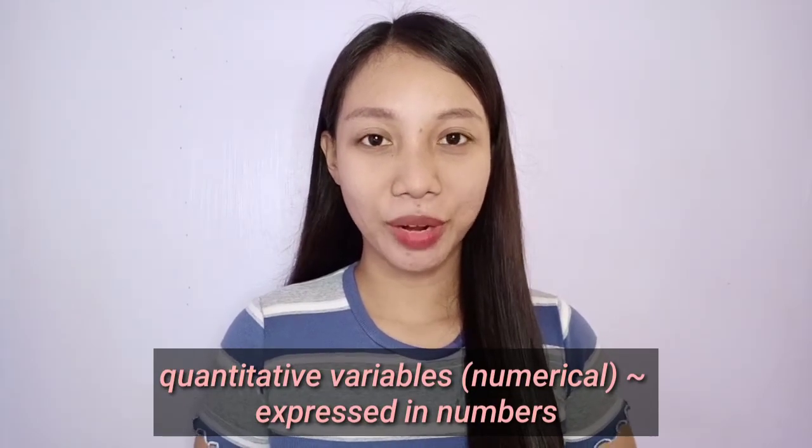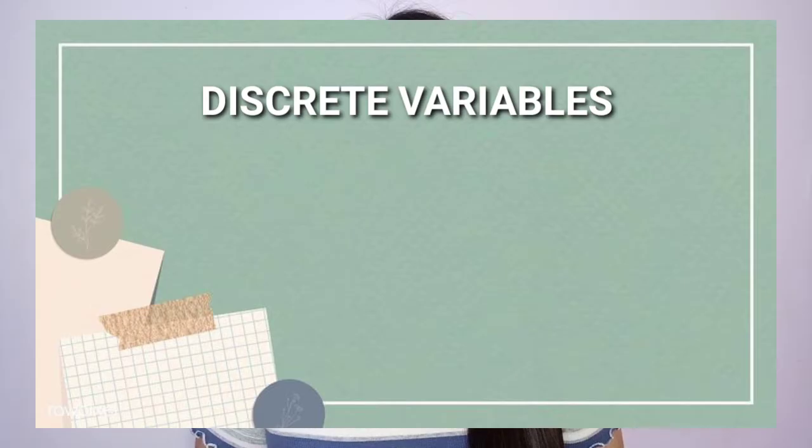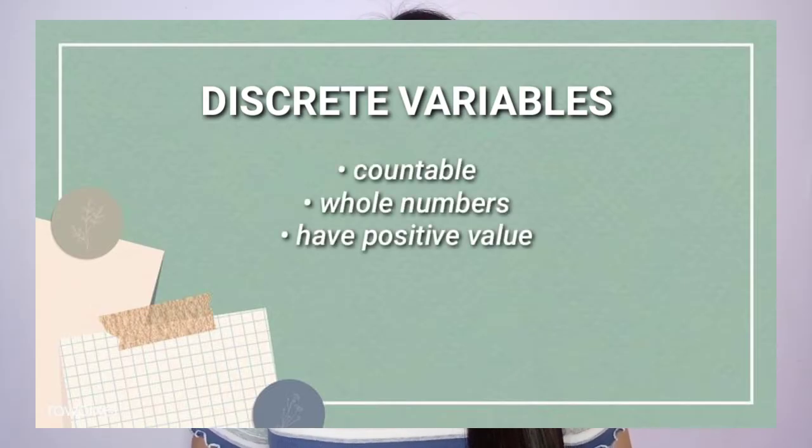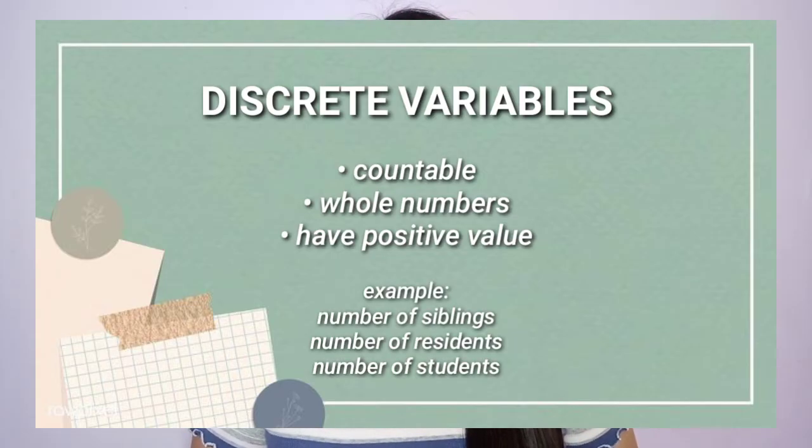Quantitative variables can be expressed in numbers and they are measured or quantified. For this category, we have discrete and continuous. Discrete variables are countable, they have positive values, and they are whole numbers, such as number of siblings, number of residents in Allen, and number of students in the class. These samples are always expressed in positive whole numbers and they are all countable. So, can we have 3.5 number of siblings? We can't have 36.5 number of students in a class — that's not possible.